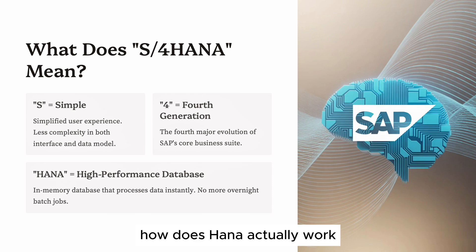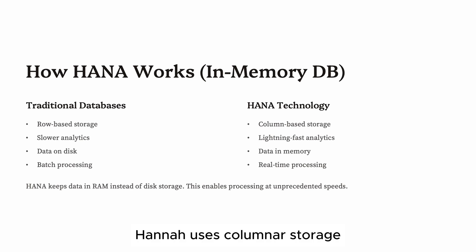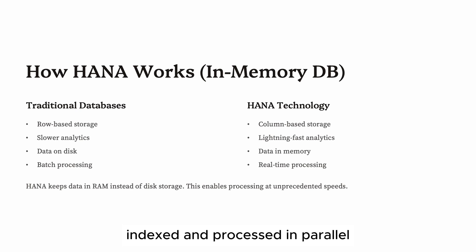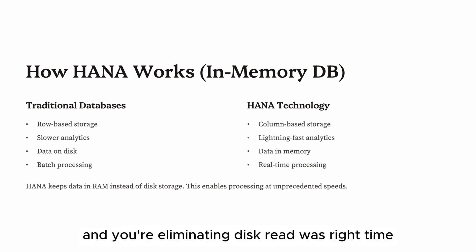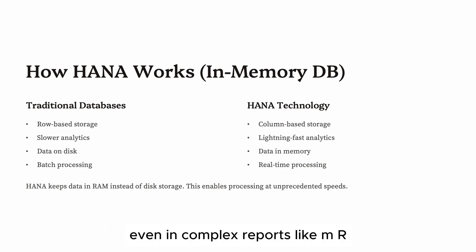How does HANA actually work? Traditional databases are row-based — they store each entry line by line. HANA uses columnar storage, meaning data is compressed, indexed, and processed in parallel. Add to that in-memory processing, and you're eliminating disk read and write time. That's why S/4 HANA can process millions of records instantly, even in complex reports like MRP runs or profitability analysis.